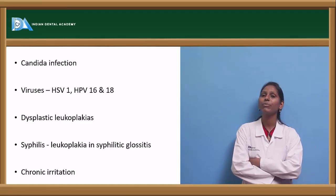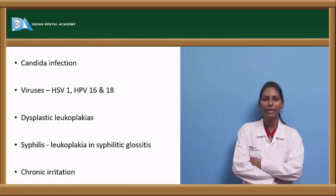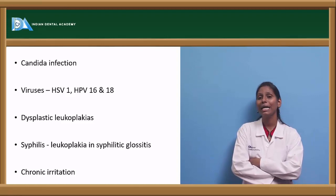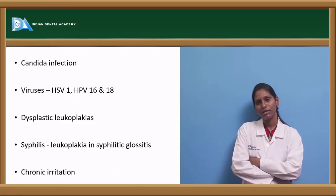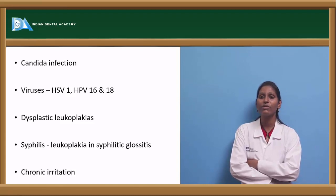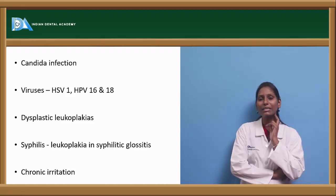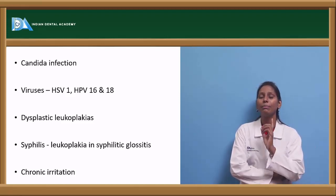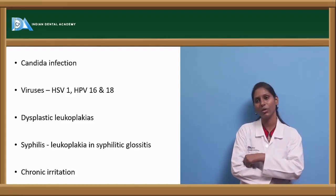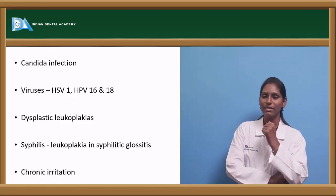We have various viral etiologies — especially HSV-1 and human papillomavirus 16 and 18 — also associated with leukoplakia, and Epstein-Barr virus is associated with hairy leukoplakia. Dysplastic leukoplakias are present where we can see dysplastic changes. Even in syphilis, we have leukoplakia associated with syphilitic glossitis. Leukoplakia was first identified in a patient who was suffering from syphilis. Syphilitic glossitis-associated leukoplakia can also be present — this is a bacterial infection.